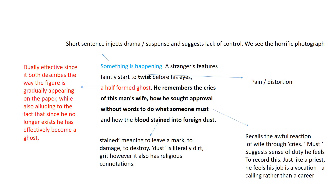The third stanza: 'Something is happening. A stranger's features faintly start to twist before his eyes, a half-formed ghost. He remembers the cries of this man's wife, how he sought approval without words to do what someone must, and how the blood stained into foreign dust.' The short sentence 'Something is happening' injects drama and suspense into the narrative and also suggests a real lack of control. We start to see this horrific photograph unfold through the eyes of the war photographer.